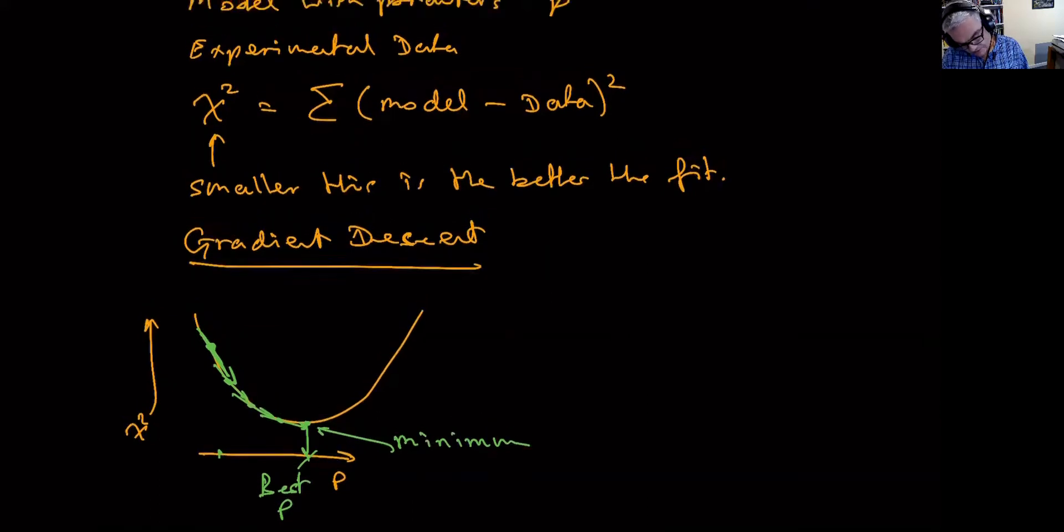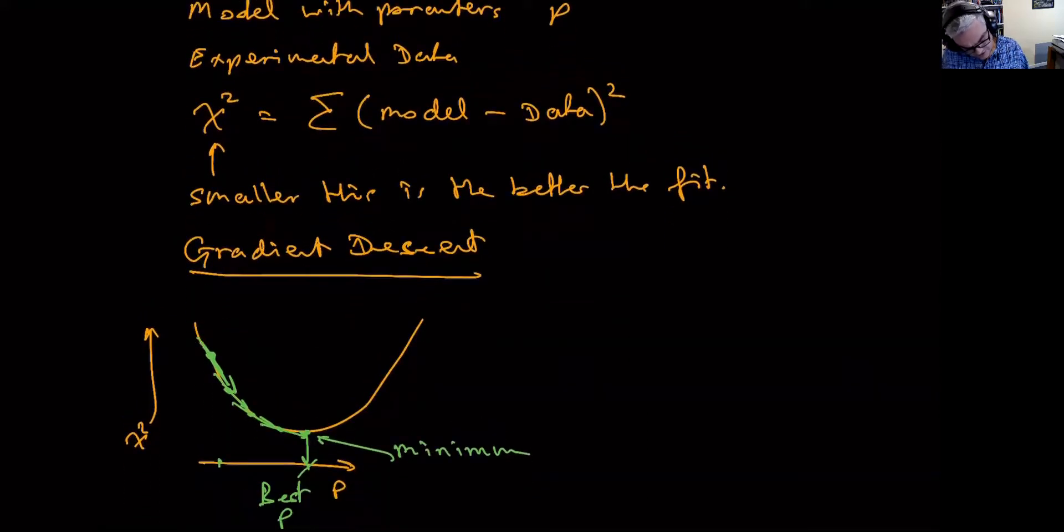This is gradient descent. Now, the problem with gradient descent is wherever you start the parameter, it'll find the nearest minimum. Now, for complex models, it turns out that the chi-squared surface isn't as simple as a bowl like this, but it can be more complex. For example, it could look something like that.